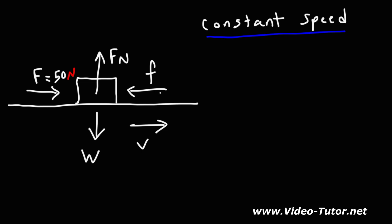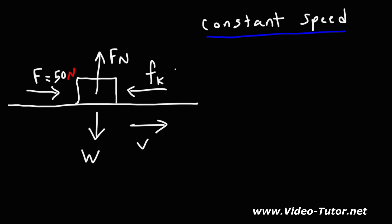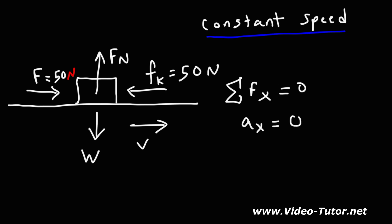Because the block is sliding to the right, that force is kinetic friction — not static friction. These two forces are equal and opposite in direction, so they cancel each other out. The sum of the forces in the x direction is zero, which means the acceleration in the x direction is zero — that's why the block moves at constant speed. The block moving at constant speed tells us the forces are balanced.